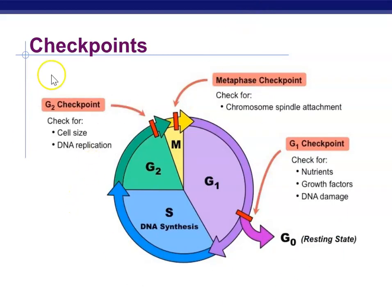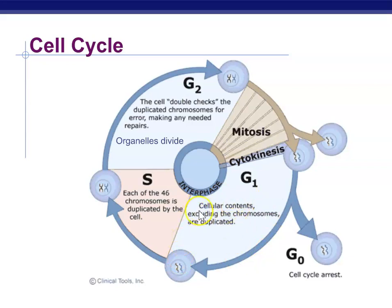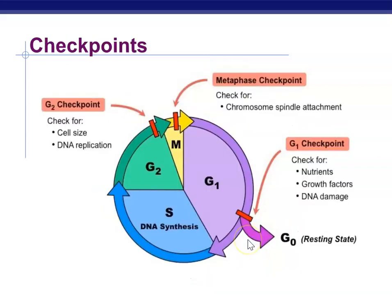In order to go through those phases you also have to pass checkpoints. You don't want cells dividing if there's no cause for it, because if you have cells dividing out of control, that's actually cancer. At the G1 checkpoint, cellular contents besides the chromosomes are being duplicated, and you're checking that the cell has everything it needs. At that checkpoint you're going to make sure that you have enough nutrients, the correct growth factors are present, and you're going to be looking for DNA damage.